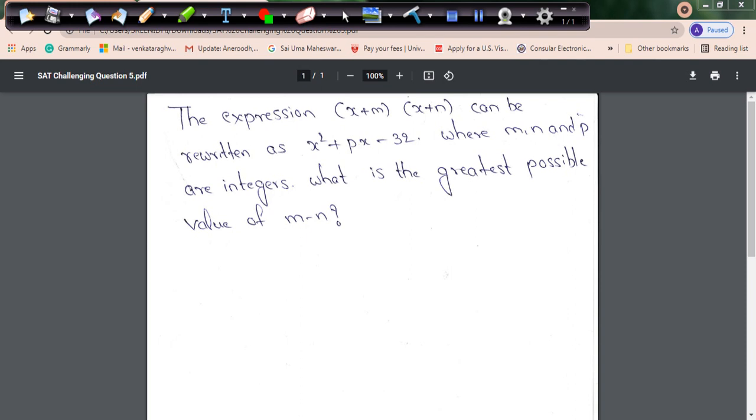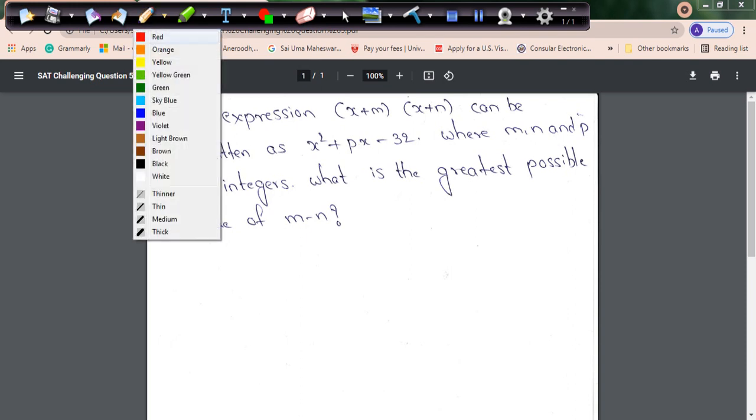Your time is up, please stop. Okay, so you might have got different answers, very good. Now let me solve and show you how simple the question is and how to solve it. So, clearly mentioned in the question: X plus M into X plus N can be rewritten as X² plus PX minus 32.